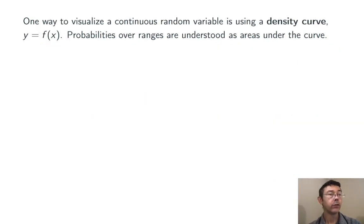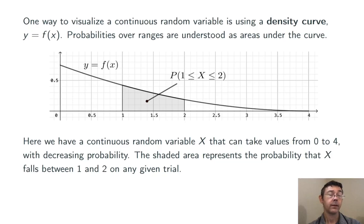One way to visualize a continuous random variable is by using a density curve. Then probabilities over ranges are to be understood as areas under that density curve. Here's a picture.